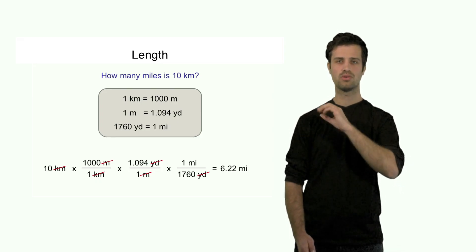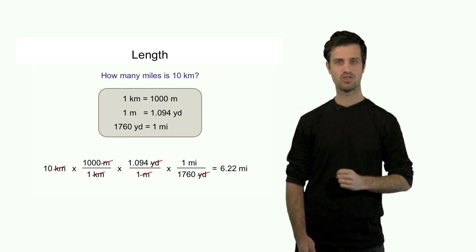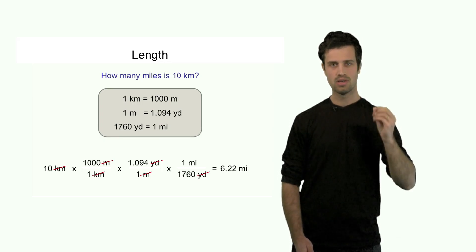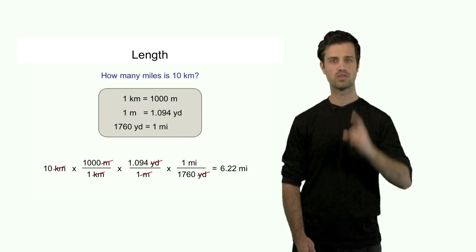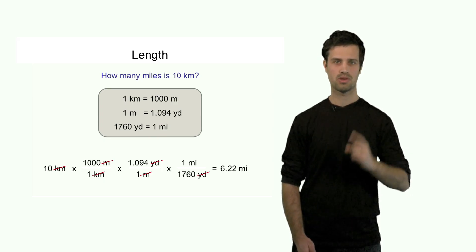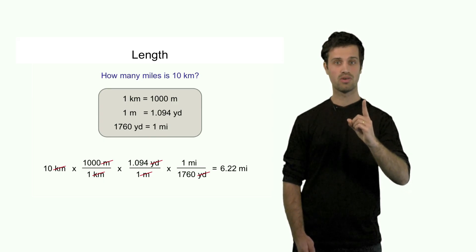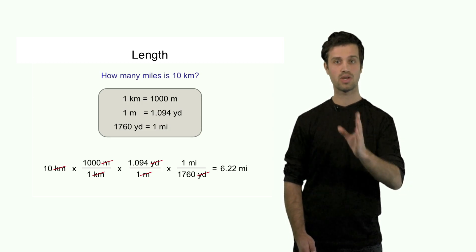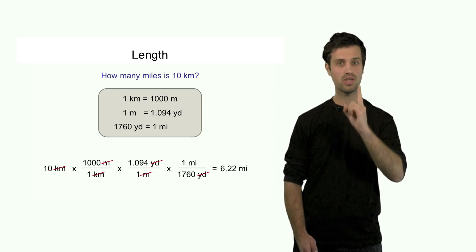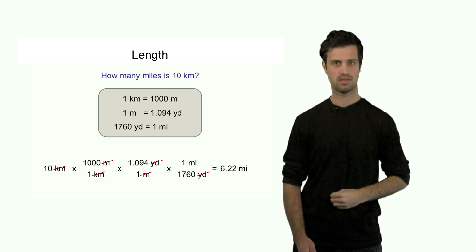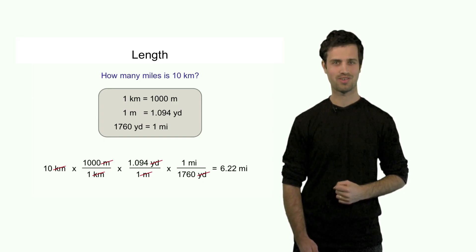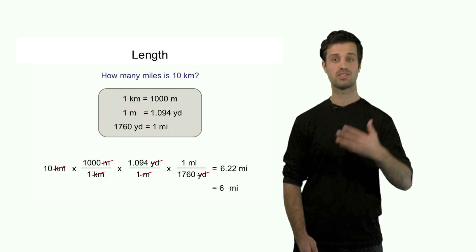Finally, I have to convert this number into one with the right number of significant figures. The number 10 only has one significant figure, because the zero has no decimal point before it, which means the zero is not significant — only the digit 1 is significant. So my answer has to be expressed in one significant figure as well. The final answer is 6 miles.